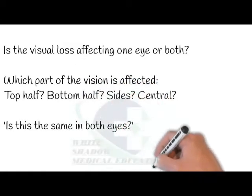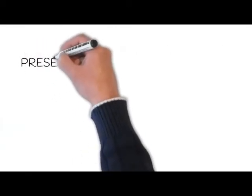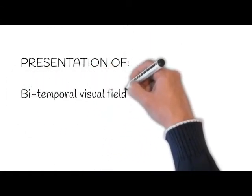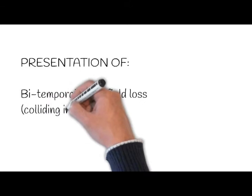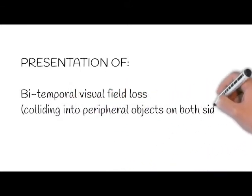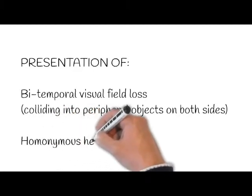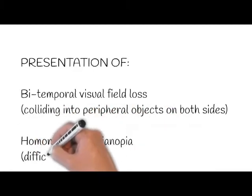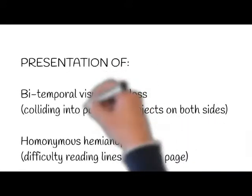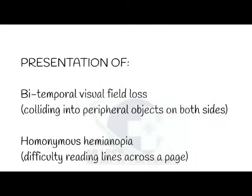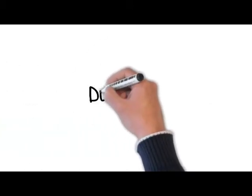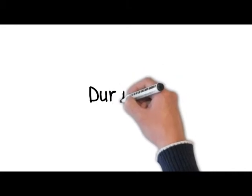A monocular visual field defect is caused by ipsilateral optic nerve lesions anterior to the optic chiasm. A patient with bitemporal visual field loss complains of colliding into peripheral objects on both sides, while a patient with homonymous hemianopia may have difficulty reading lines across a page. At this point we have a clue whether it is acute or chronic onset, unilateral or bilateral, and the extent of vision loss.